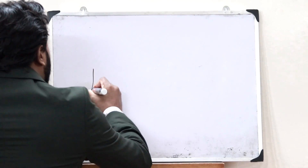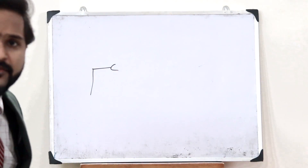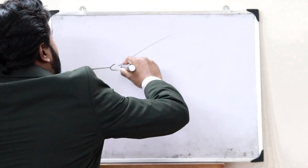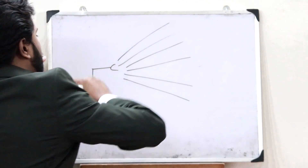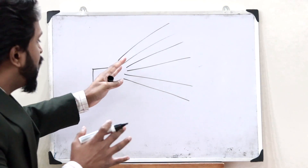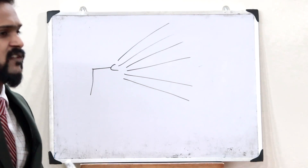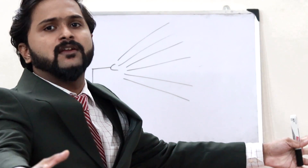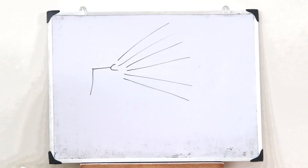Let us consider a particular transmitting antenna. This antenna is transmitting a signal onto free space. When drawn on a whiteboard it looks like a two-dimensional signal, but in reality this is a three-dimensional signal — it transmits in three-dimensional space.